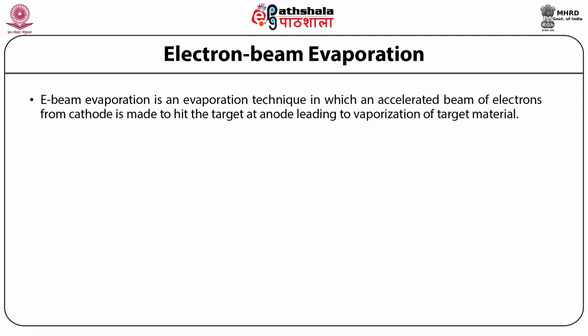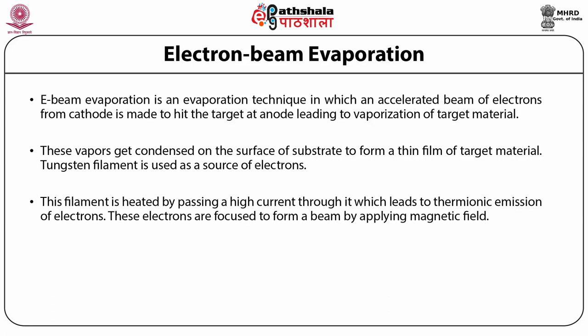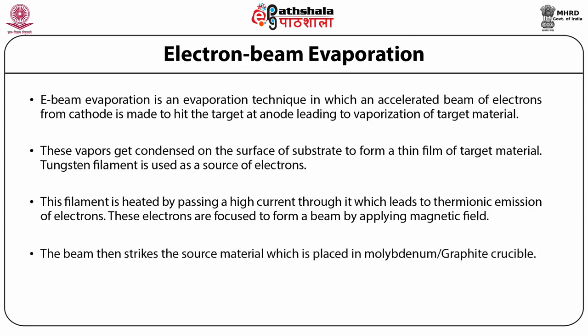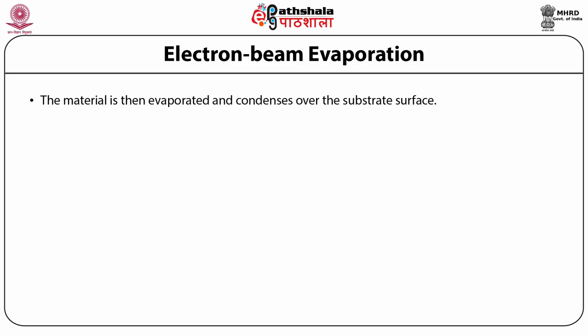Electron beam evaporation is an evaporation technique in which an accelerated beam of electrons from the cathode is made to hit the target at the anode, leading to vaporization of target material. These vapors condense on the surface of the substrate to form a thin film. A tungsten filament is used as the source of electrons, heated by passing a high current through it, which leads to thermionic emission of electrons. These electrons are focused to form a beam by applying a magnetic field, and the beam strikes the source material placed in a molybdenum or graphite crucible. The beam is swept across the surface of the source material to uniformly heat all of the material, which is then evaporated and condenses over the substrate surface.